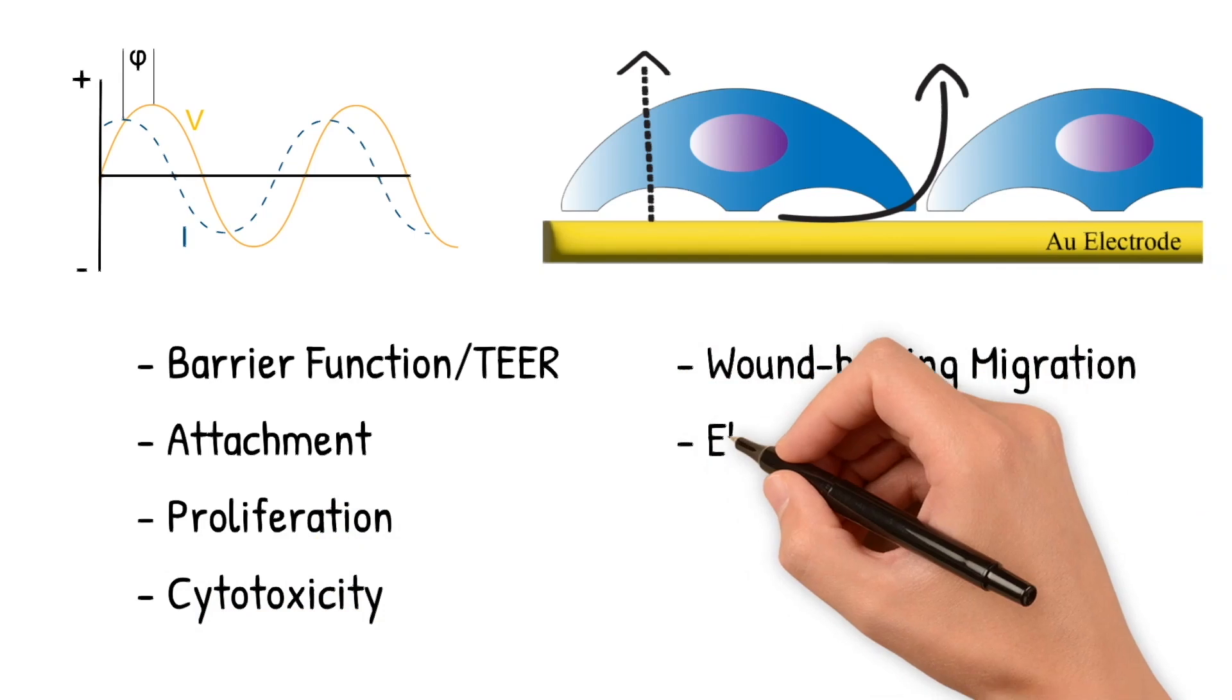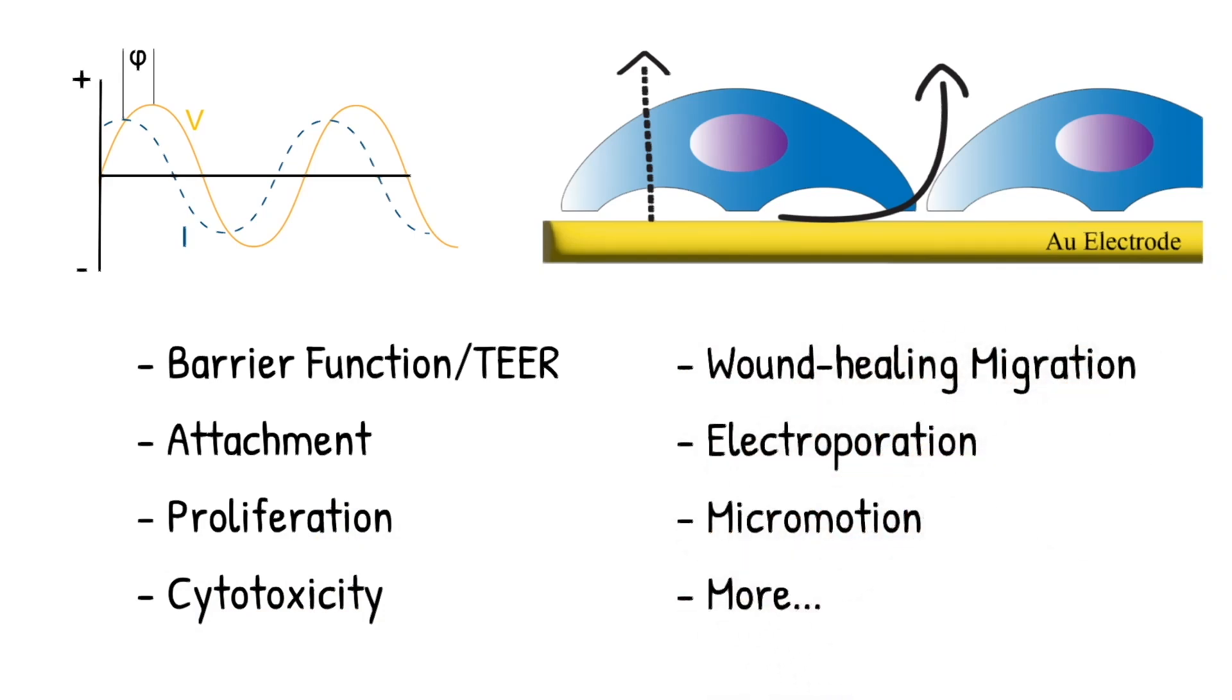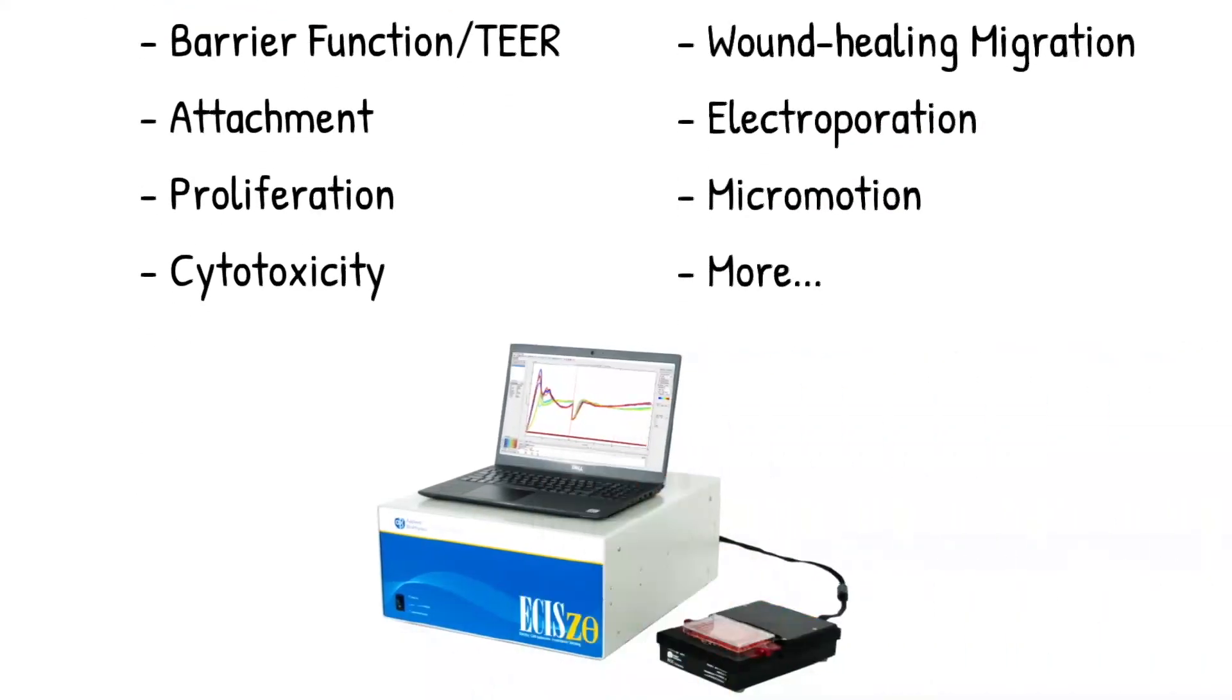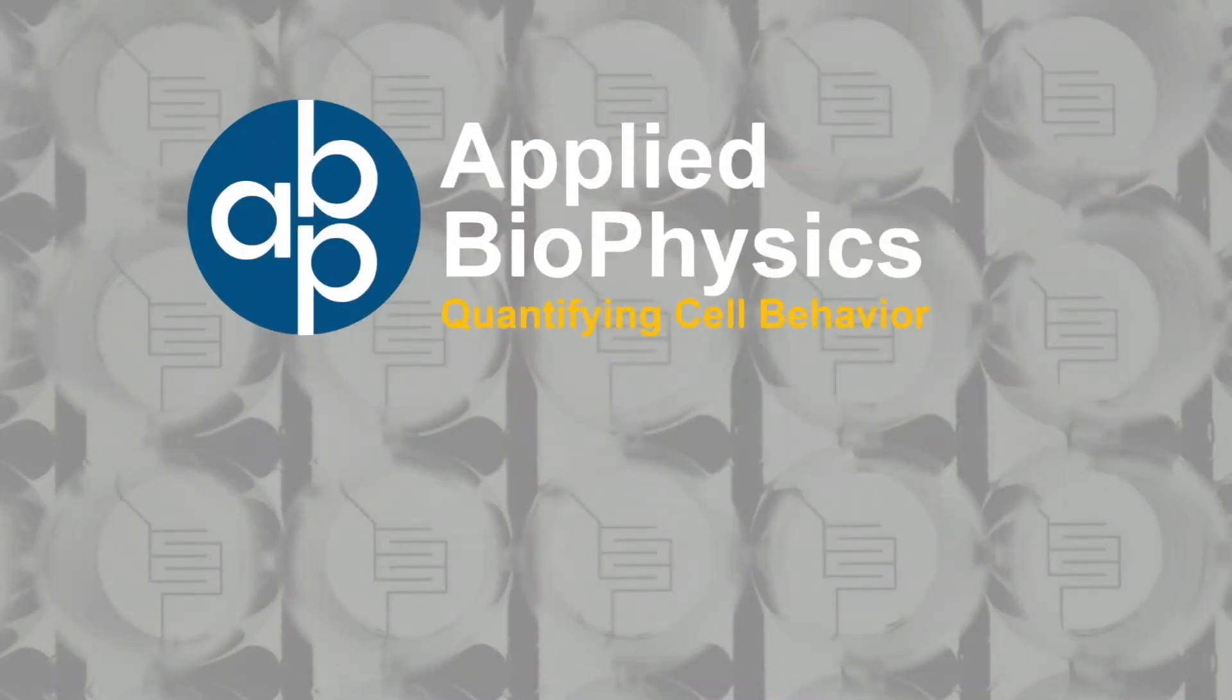wound healing migration, electroporation transfection, micromotion, and even more. And with the ECIS Z-theta's capability of measuring multiple frequencies simultaneously, all of these behaviors can be measured in the same experiment, making ECIS one of the most efficient and effective techniques in quantifying cell biology.